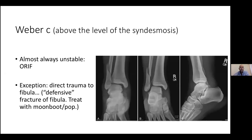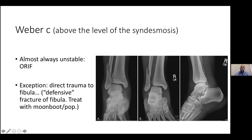Weber C is above the level of the syndesmosis. It is always unstable and always needs an ORIF — this is the other one we need to fight for. This patient will have severe osteoarthritis and not be able to walk within five years if we don't operate. I might sound dramatic, but I've seen this many times — young people who cannot walk on a painful ankle. Arthrodesis for ankles is a very big operation and a very big problem for them afterwards, so it's worth fighting for these ones.